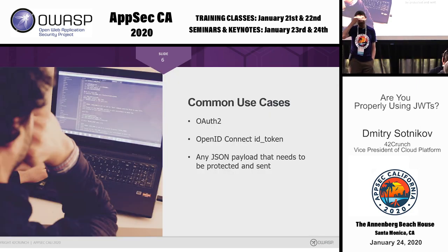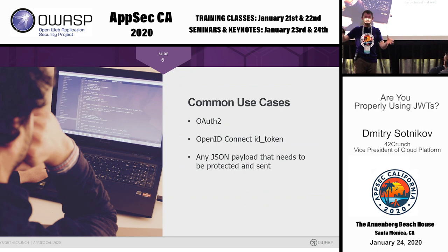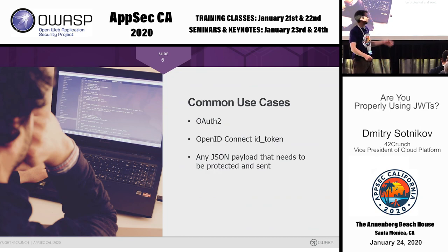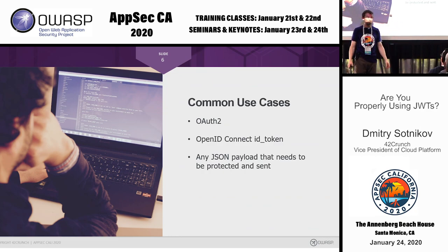The most common use cases: OAuth — most OAuth implementations use JSON web tokens. OpenID Connect is a standard based on OAuth for authentication, and it actually prescribes using JWT tokens. You can also use JWT tokens for any JSON payload you want to give someone with information you want to encrypt or sign — they don't have to be used just for authentication and authorization.